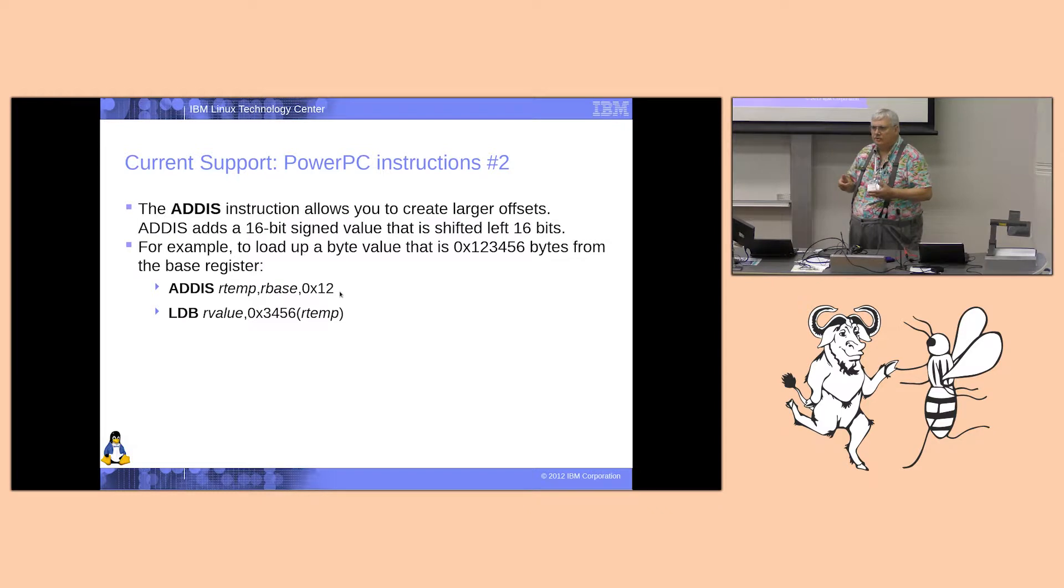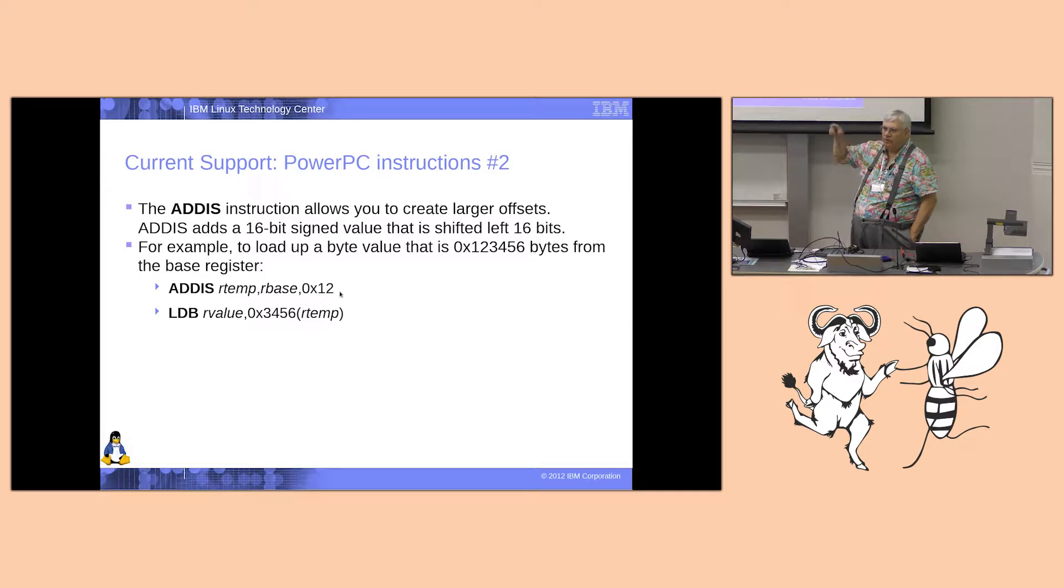In order to extend the addressing, there's this ADDIS instruction, ADD IMMEDIATE SHIFTED, that takes a signed 64-bit value, shifts it left 16 bits, and you can then add it to either zero or a base register to form an address. And this is oftentimes used in conjunction with the load or store, where you do the ADDIS from the base register to form the upper part, and then you use the load that has the offset incorporated into it or store. For example, ADDIS to do a temporary and then a load byte with a value with a large temporary.